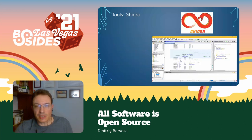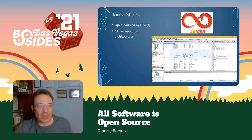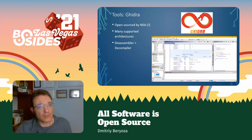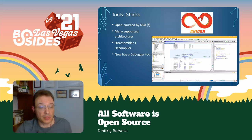Ghidra is another famous tool open-sourced by the NSA of all organizations. Many supported architectures, also fairly mature. It's a little rough around the edges sometimes, especially the user interface, but there's tons of work going on improving it, and you can contribute — it's on GitHub. It has a disassembler, decompiler, and now has a debugger too with the latest version. It also has plug-ins and scripting.